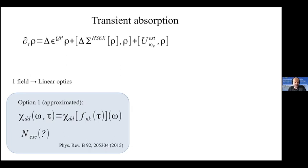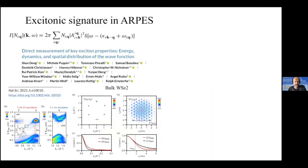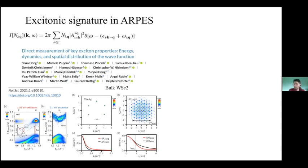A question about quantitative comparisons with the mentioned experiments: in this work with Angel Rubio and Anna Subner, there are some comparisons, in particular about the excitonic wave function. Here in the lower panels you can see the experimental signal as a function of k and then the simulated one, which I believe is the excitonic wave function. The nice thing is that they can really measure the excitonic wave function. I am not aware of any other means of getting the excitonic wave function experimentally.